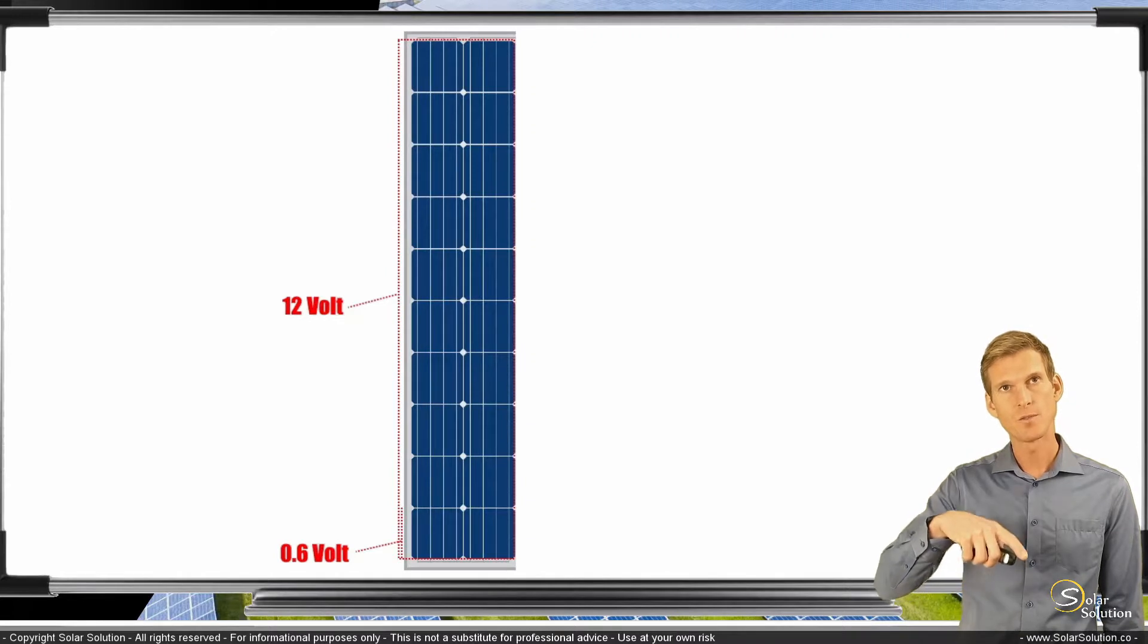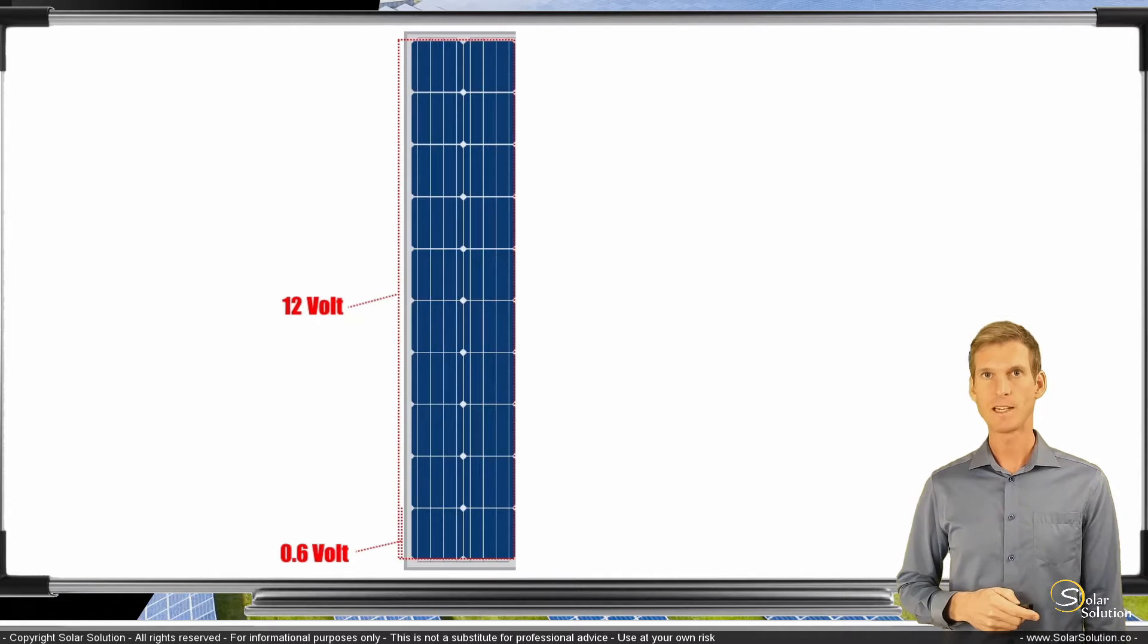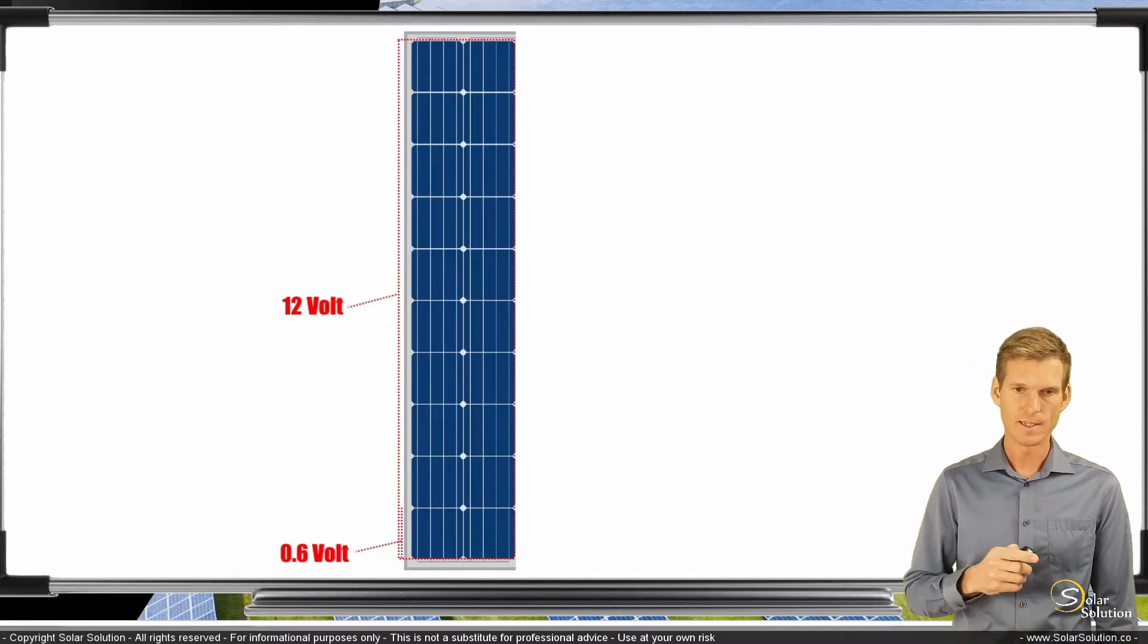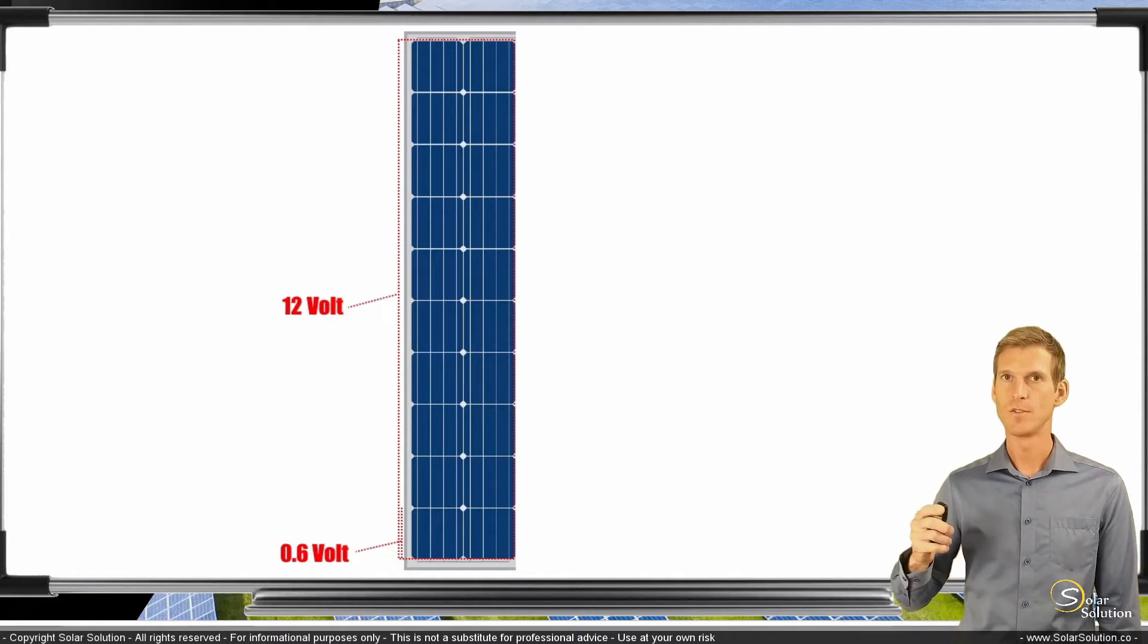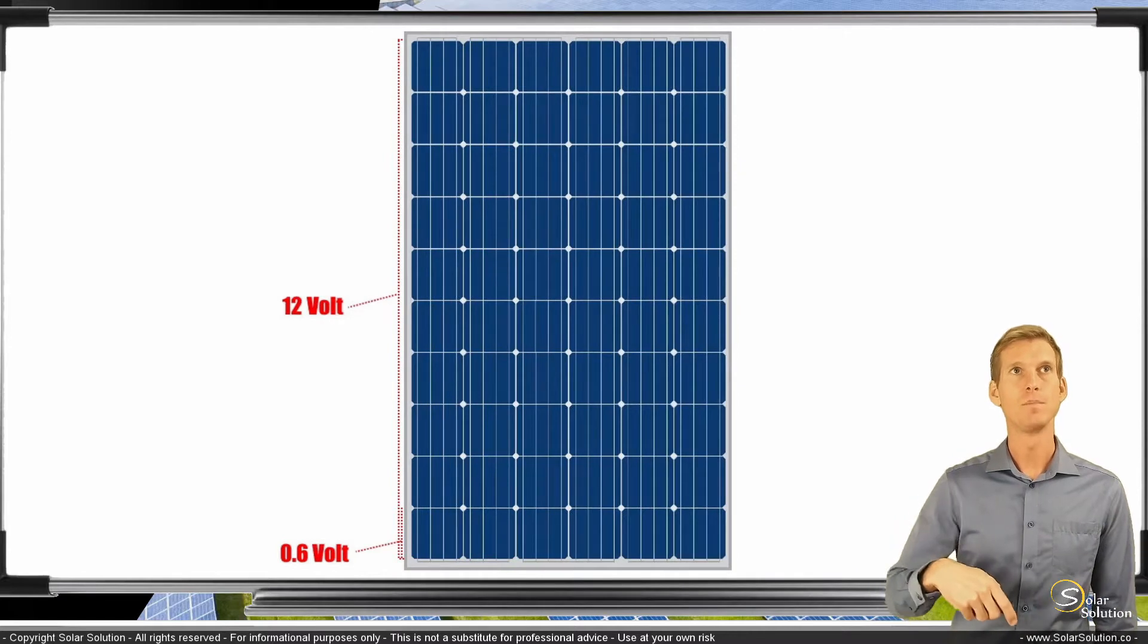So the 20 cells all connected with each other in a series connection, we have an open circuit voltage, an electrical pressure of 12 volts. Now we continue like this, we continue to expand our solar module and we add another 20 and another 20 until we have our complete PV module.